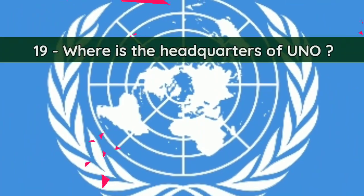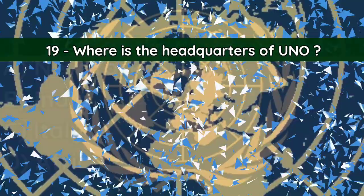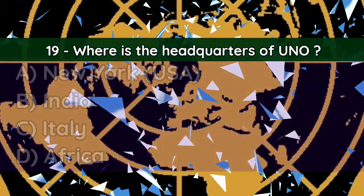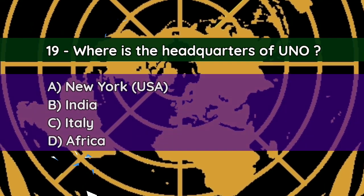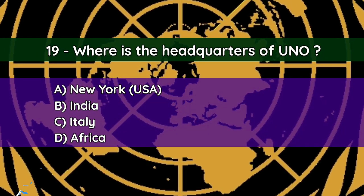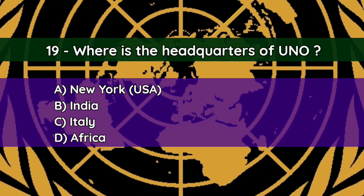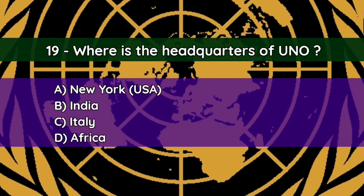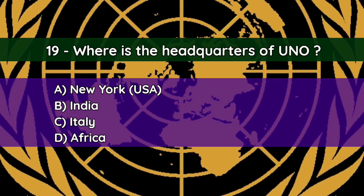Question number nineteen: Where is the headquarters of UNO? A. New York, USA, B. India, C. Italy, D. Africa. And the correct answer is A — New York, USA.